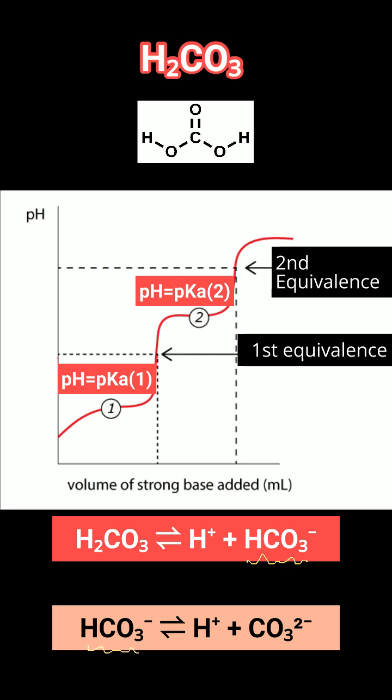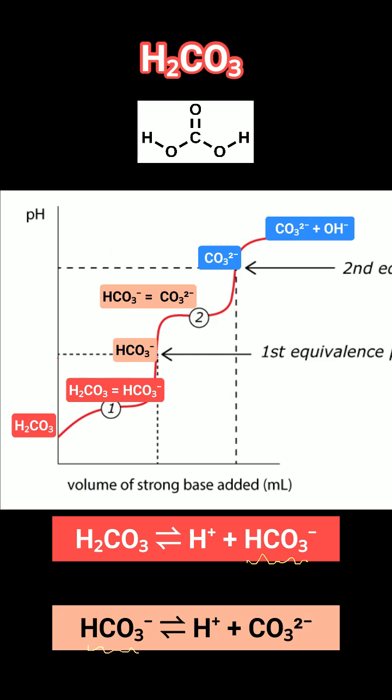At each equivalence point, the dominant species in the solution changes from the acid form to its conjugate base. Multiple equivalence points, or plateaus, indicate you're dealing with a polyprotic acid. Finally, the number of equivalence points equals the number of acidic protons.